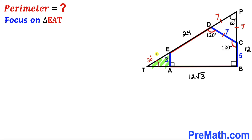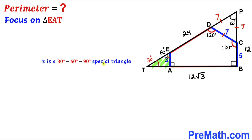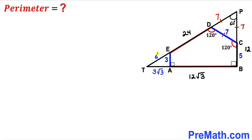Now we focus on the small right triangle EAT. We know this angle is 90 degrees and this angle is 30 degrees, so the third angle has to be 60 degrees — making it a special 30-60-90 triangle as well. The smallest leg is 3, so the hypotenuse TE is twice that, which is 6 units. The third leg TA is 3 times the square root of 3.